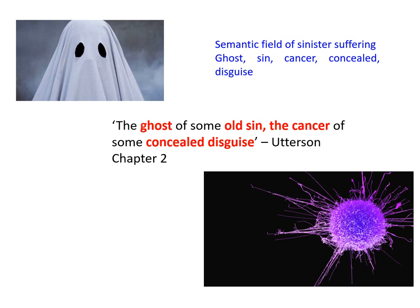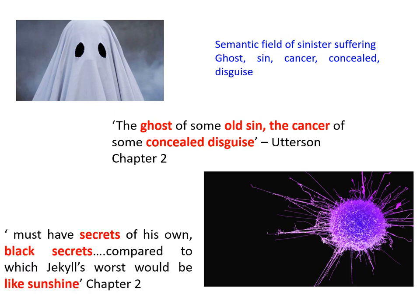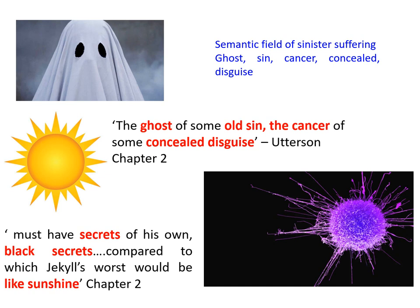Then later within the same conversation, Utterson is sharing his alarm that Hyde must have his own secrets — 'He has secrets of his own, black secrets, compared to which Jekyll's worst would be like sunshine.' The assumption that Utterson has taken, that Mr Hyde must be blackmailing his friend Dr Jekyll, is reiterated, but it's also heightening the evil of Mr Hyde.